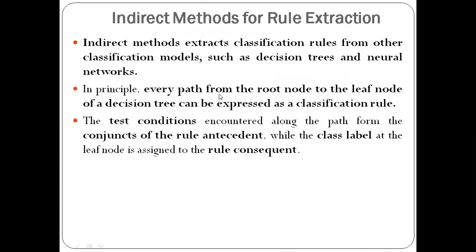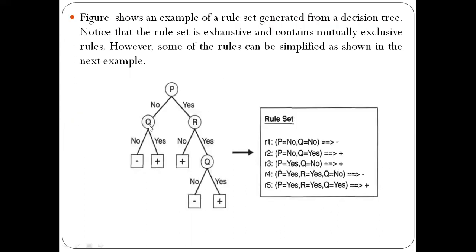Now coming to the indirect method for rule extraction. In direct methods we discussed the sequential covering algorithm to extract rules directly from data. In the indirect method, we use different classification models such as decision trees or neural networks for rule extraction. Here is an example where we have generated rules from a decision tree.